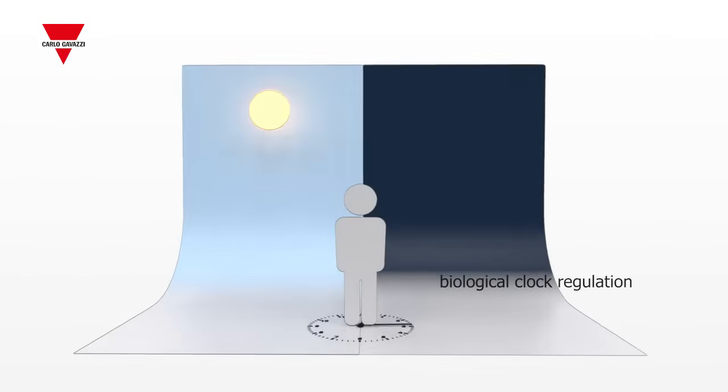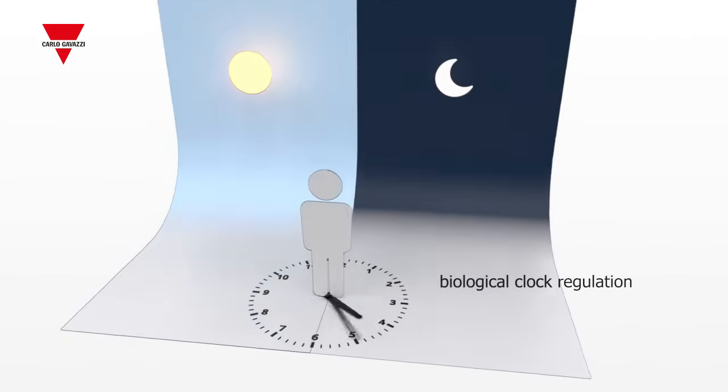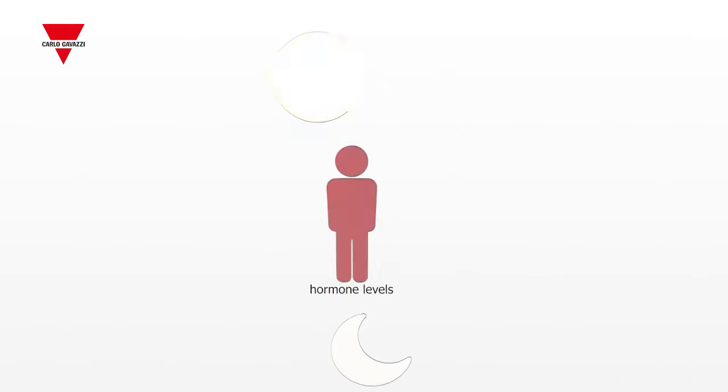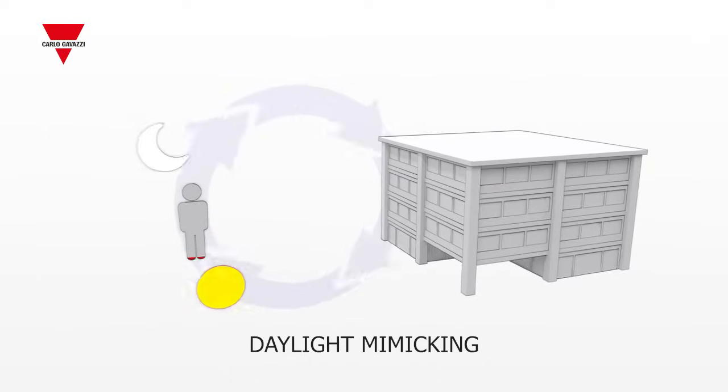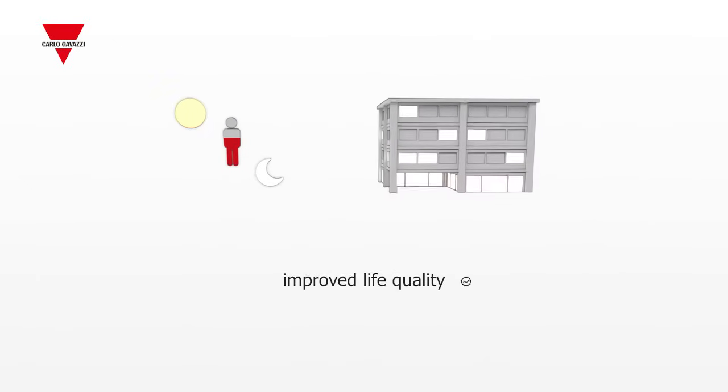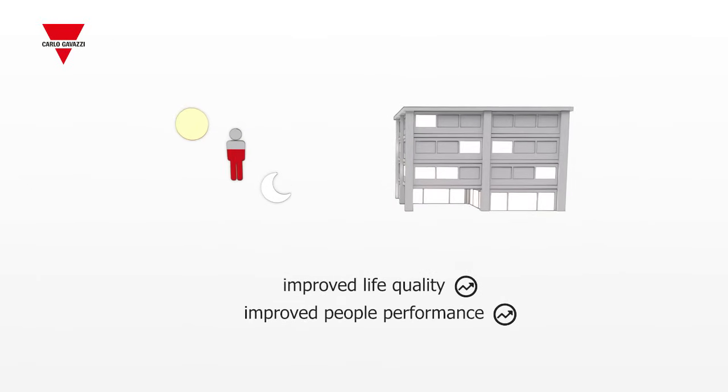Our biological clock is regulated by light and darkness. Our body's hormone levels rise and fall with these light cycles, so mimicking this behavior is becoming more and more popular in indoor lighting to improve the quality of life and performance of people.